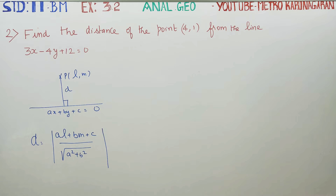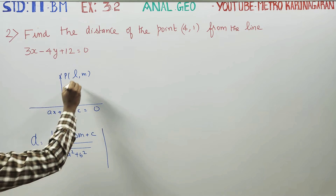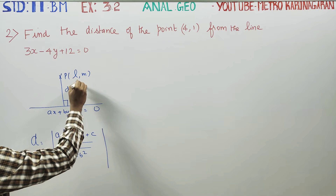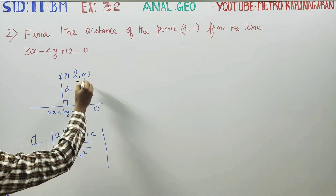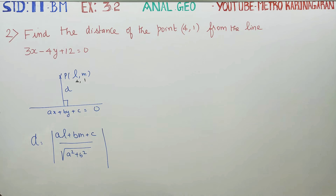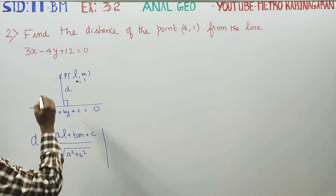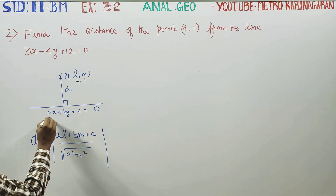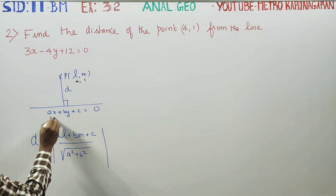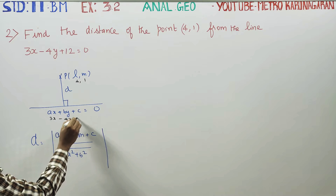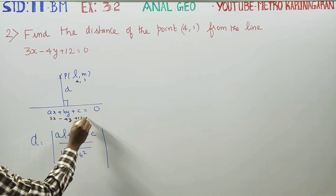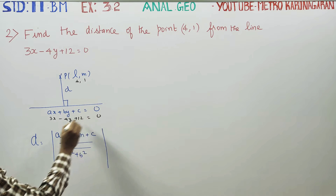To find the distance, we identify the point as (4, 1), so L is 4 and M is 1. The line is 3x - 4y - 12 = 0.